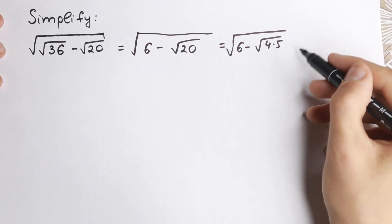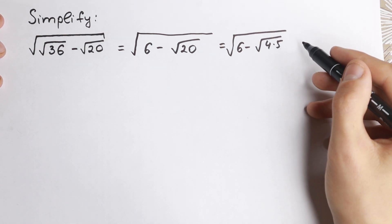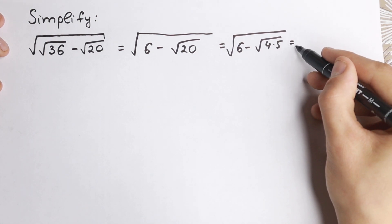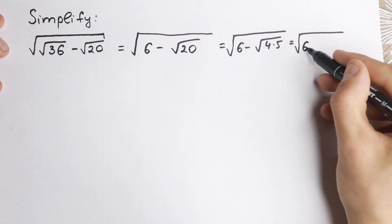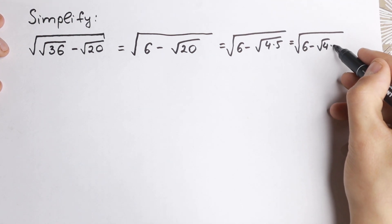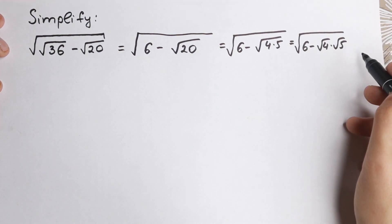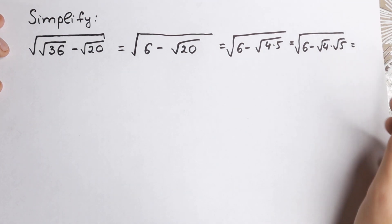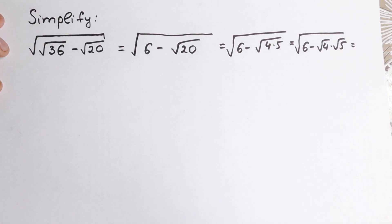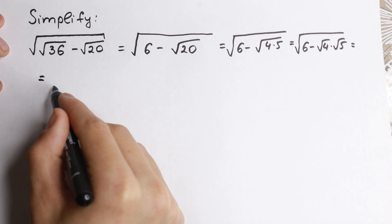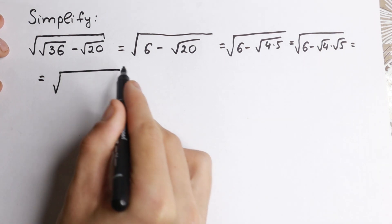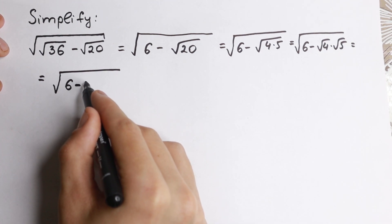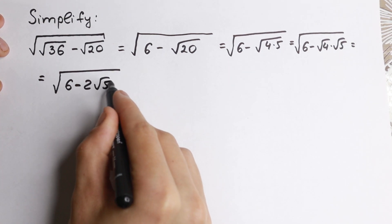Now we need to know a really good property. We can separate these square roots: 6 minus square root of 4 times square root of 5. And since square root of 4 equals 2, we have 6 minus 2 times square root of 5.